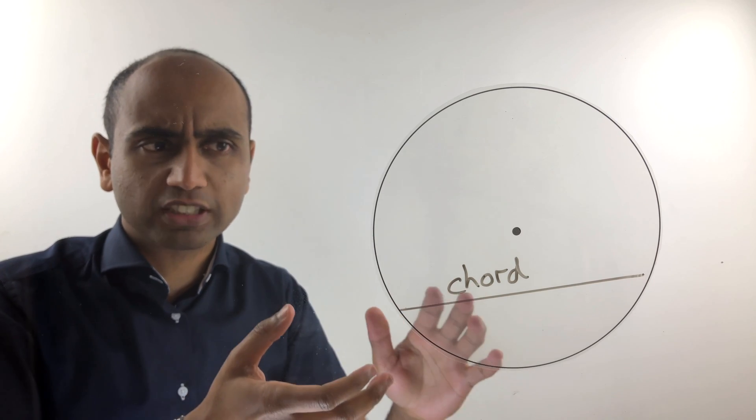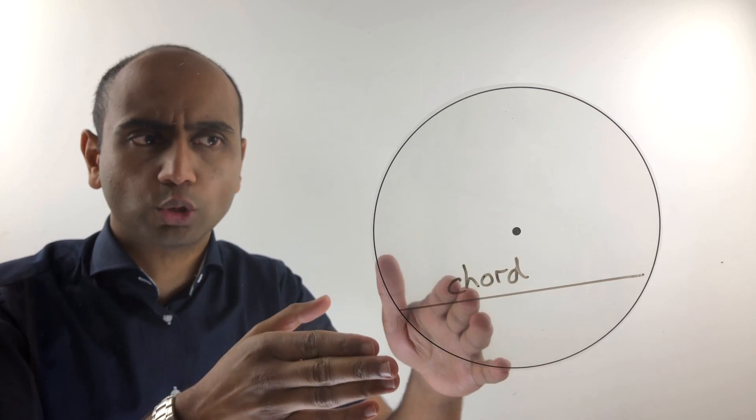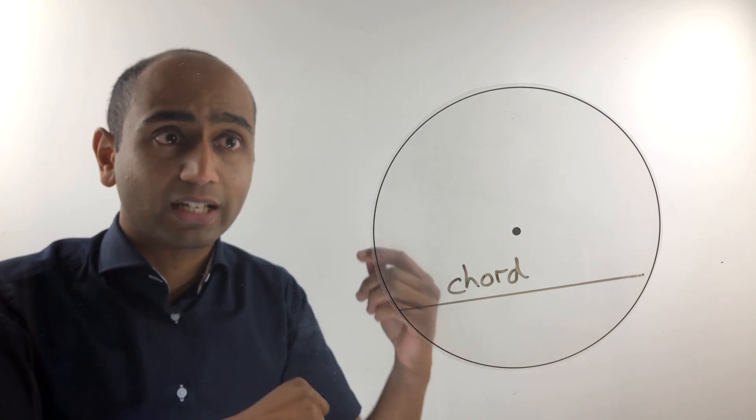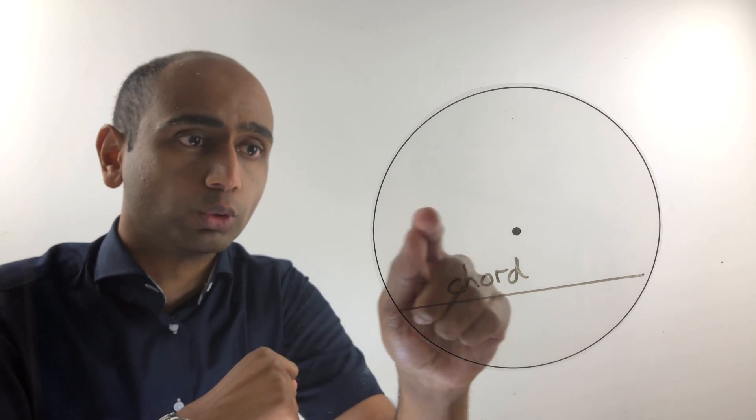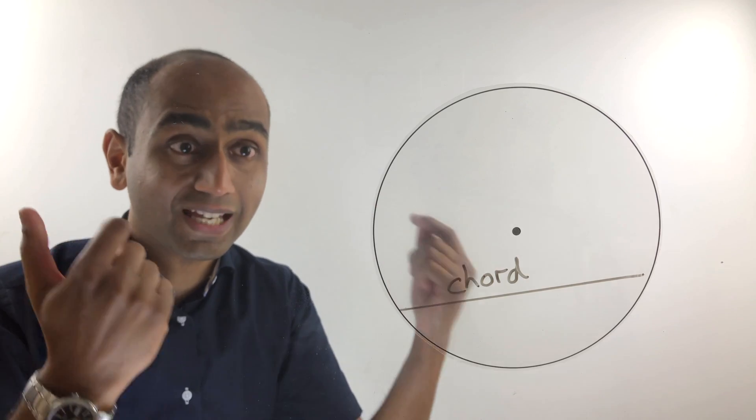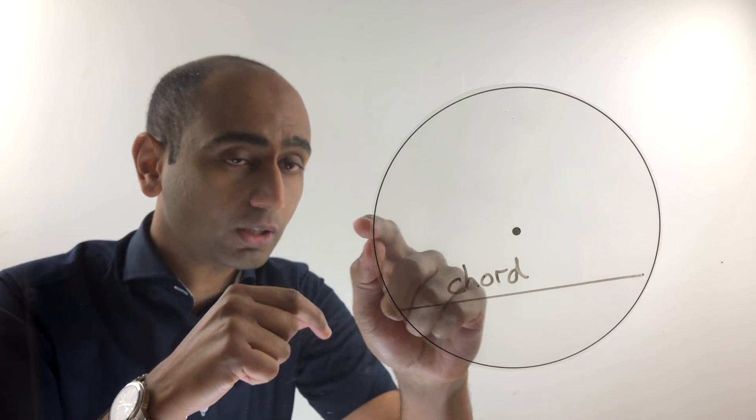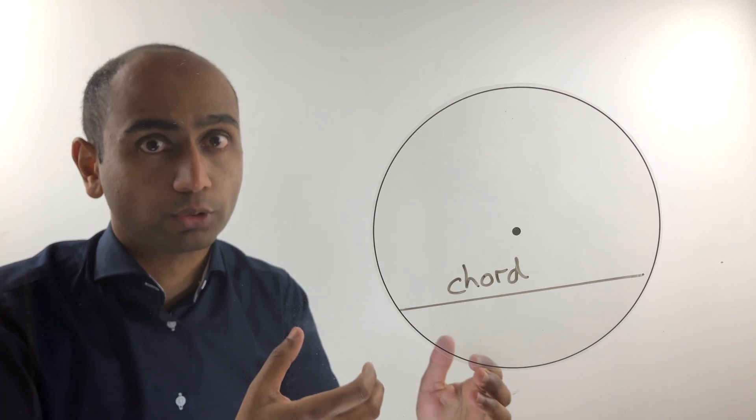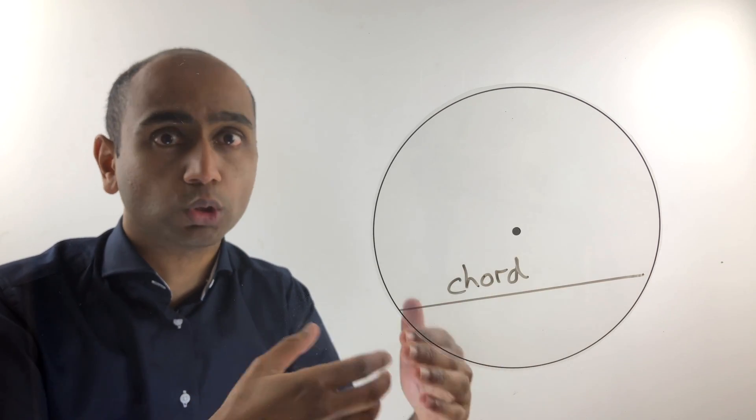So can you think about what the difference is between the diameter and the chord? Hopefully you remember that a diameter has to go through the center of the circle. So yes, it does join two points on the circumference, but it must go through the center. A chord does not have to go through the center, so this is an example of a chord.